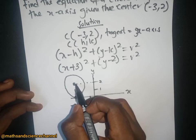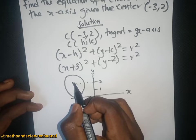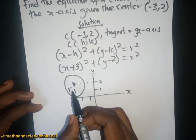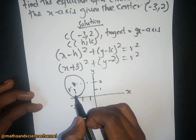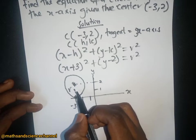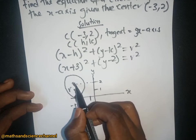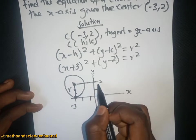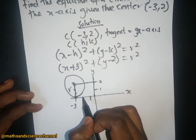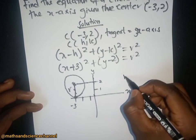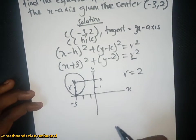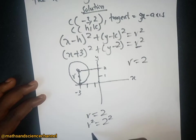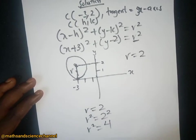The distance from the center all the way to that point on the x-axis is referred to as the radius. The distance from the center at y = 2 down to the x-axis is just two. So the radius r equals two, and therefore r squared equals four.